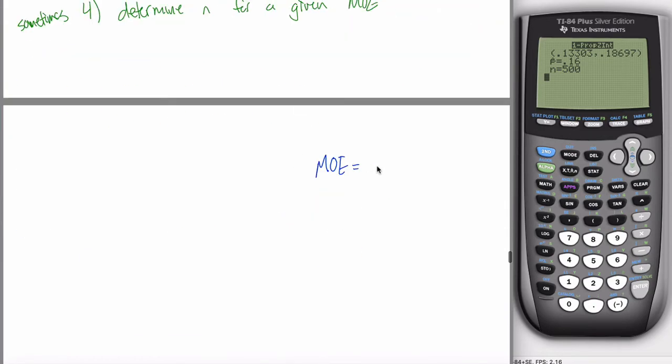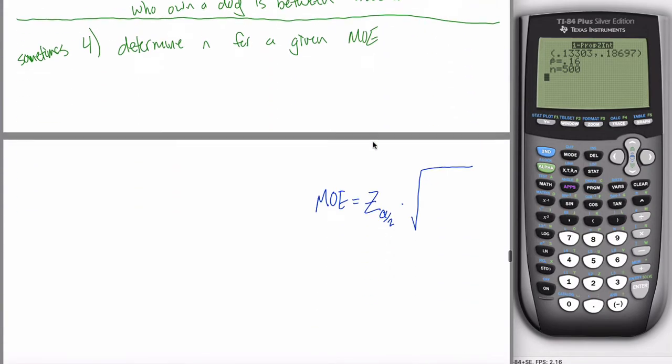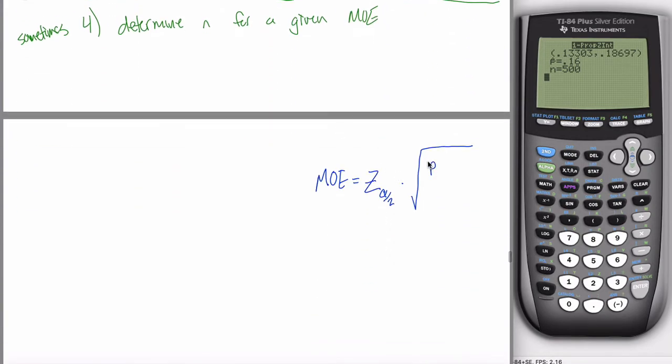The margin of error is just some special number, which I'll use the symbol Z with a little alpha divided by 2 in the subscript to represent. This means some special number of whatever the standard error is, the standard deviation of your sampling distribution, which was p hat times 1 minus p hat divided by n. This is what the margin of error is. You never have to use this formula because your calculator does it all behind the scenes for you.